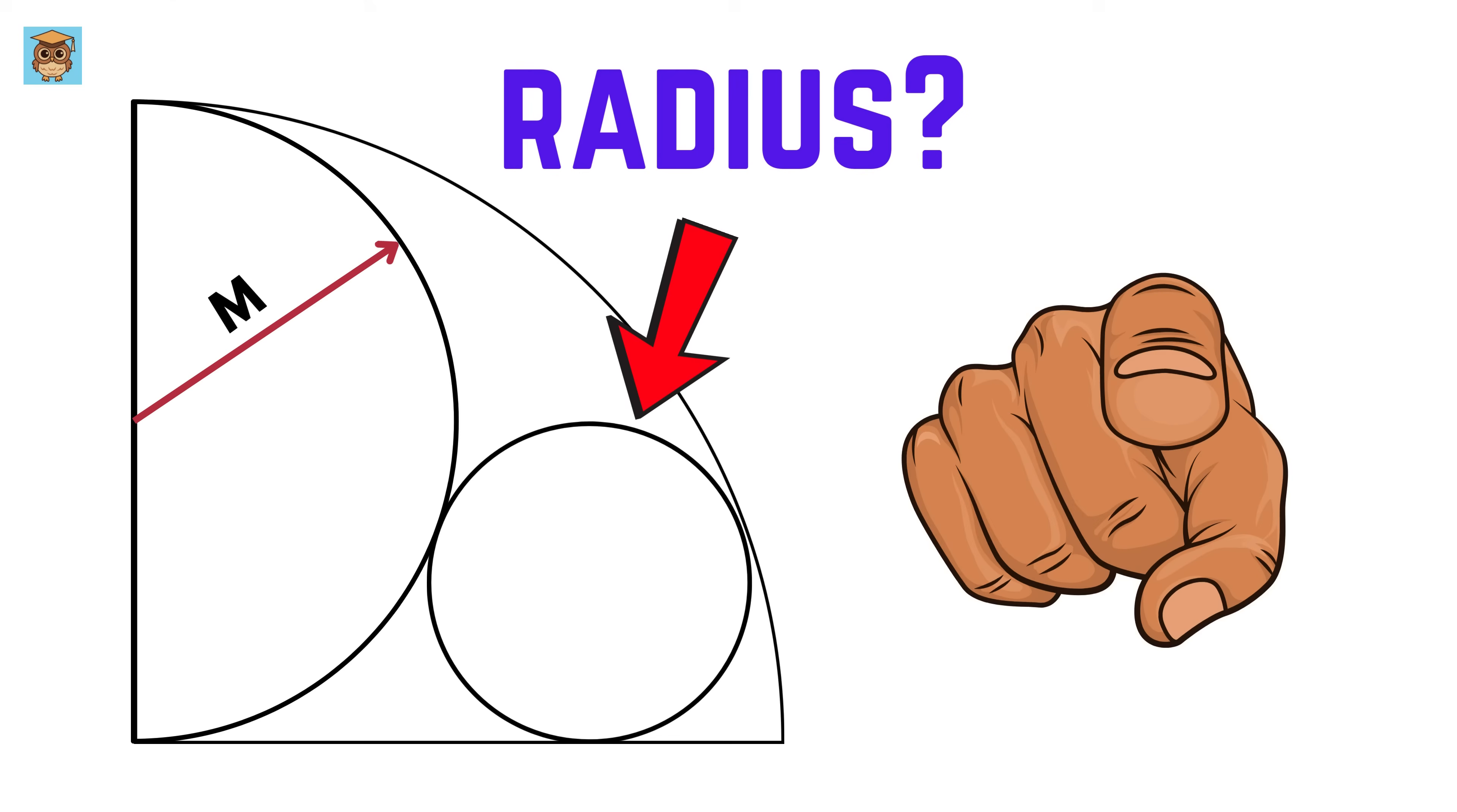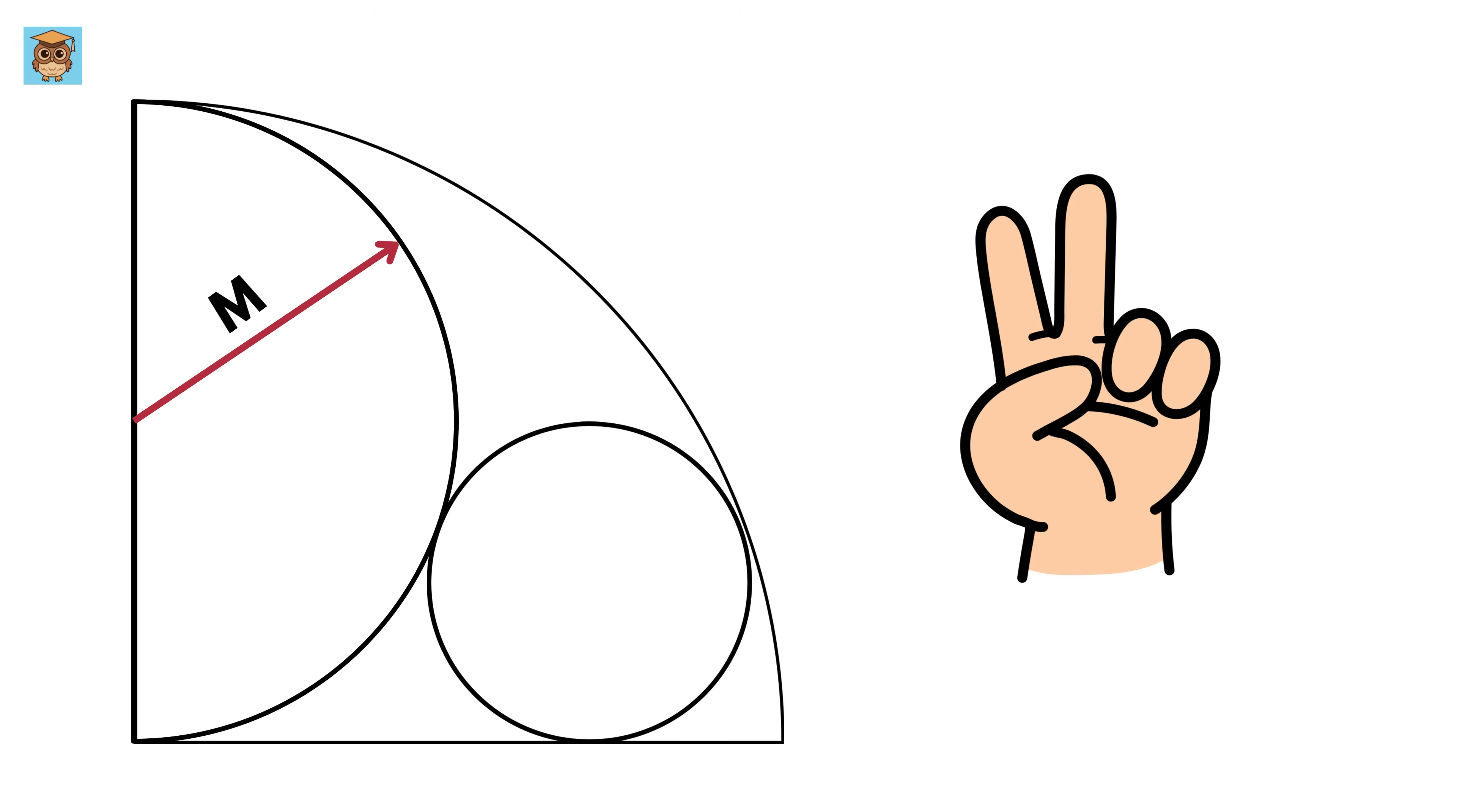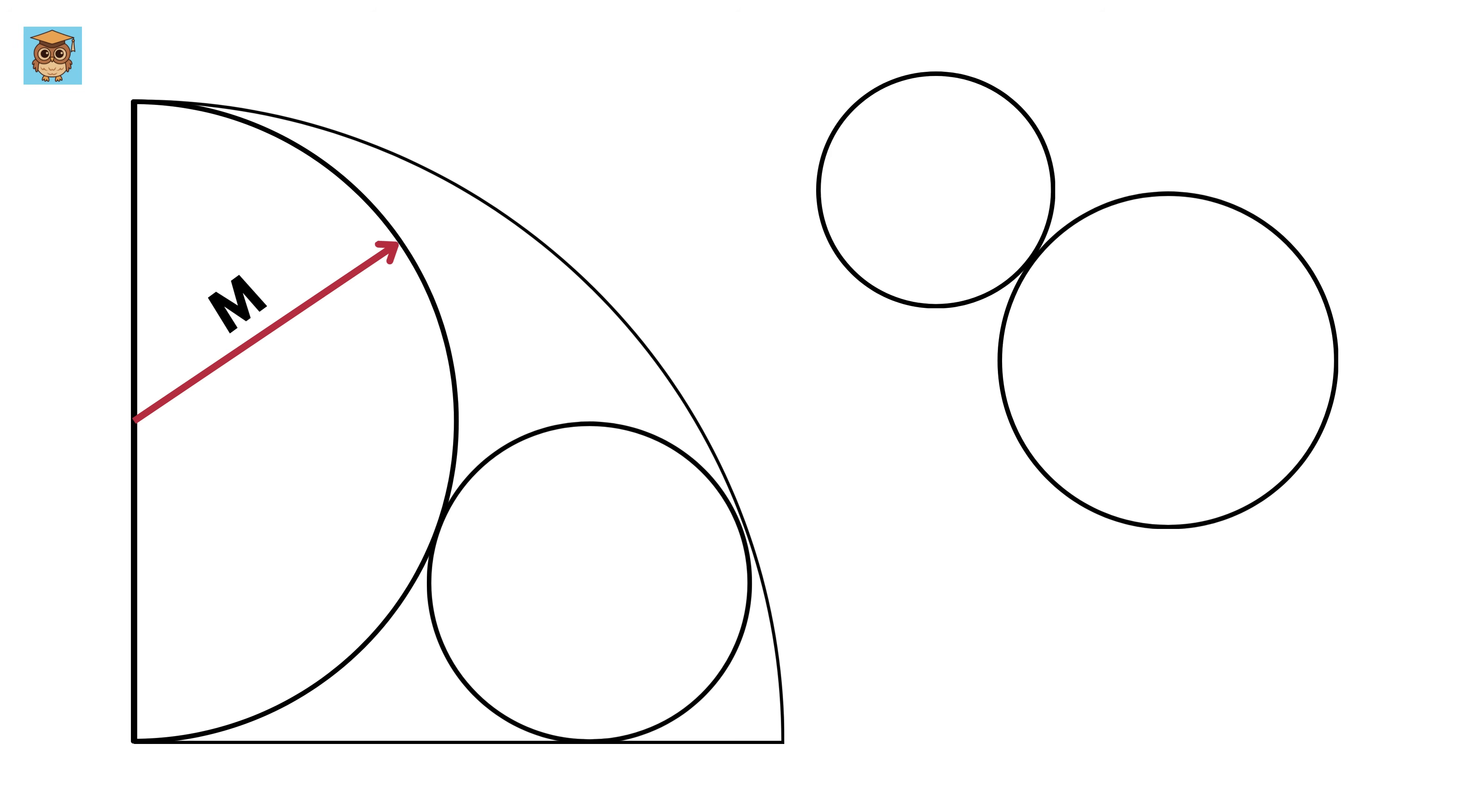Okay, before we begin we need to know these two things. Assume we have two externally touching circles. Then if we draw a line which connects the center of both of these circles, then it will also pass through this common point.